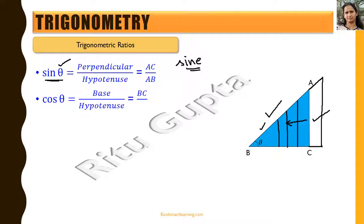The next trigonometric ratio is cos theta, whose full form is cosine. Cos theta equals base upon hypotenuse, which in this case is BC upon AB. Again, if we keep reducing the side BC, AB also reduces in the same proportion, so cos theta is not going to change if we change the sides, as long as theta remains the same.